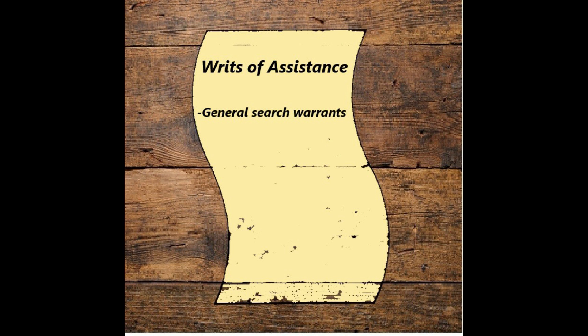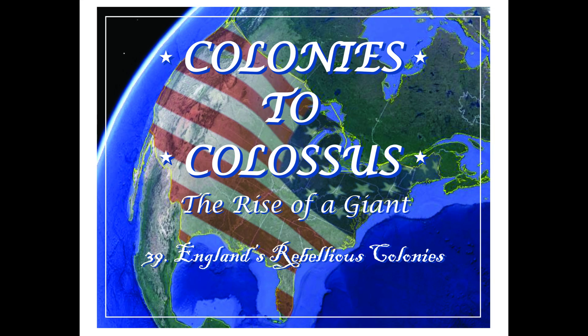A writ of assistance was basically a blank search warrant that customs officials used when trying to stop smuggling. It gave them the right to search a vessel for basically any cause they wanted to — unlike our Bill of Rights, which requires search warrants to be very specific in naming the place, person, or things sought. This gave them a general right to search ships whenever they wanted to, and some officials abused their powers. Writs of assistance were an important part of the bundle of irritations that the colonists had against the British government. We've talked generally about the causes of the American Revolution, and I hope this provides a road map as we go through specific events in the next few podcasts.